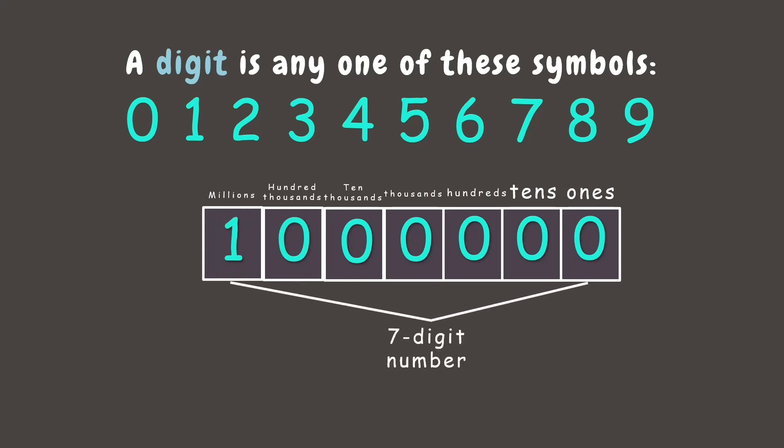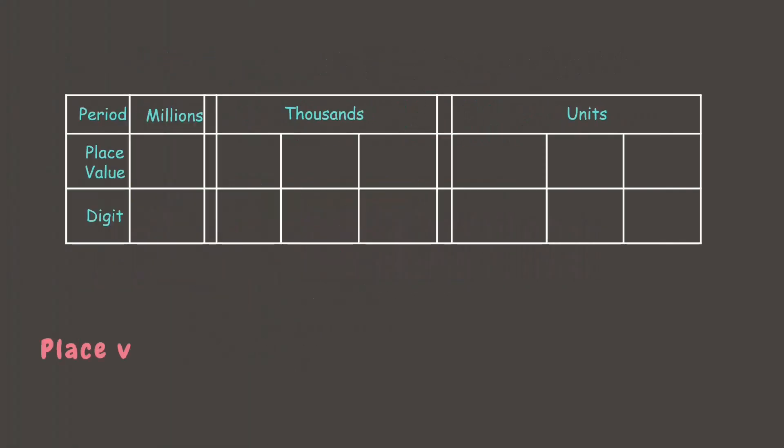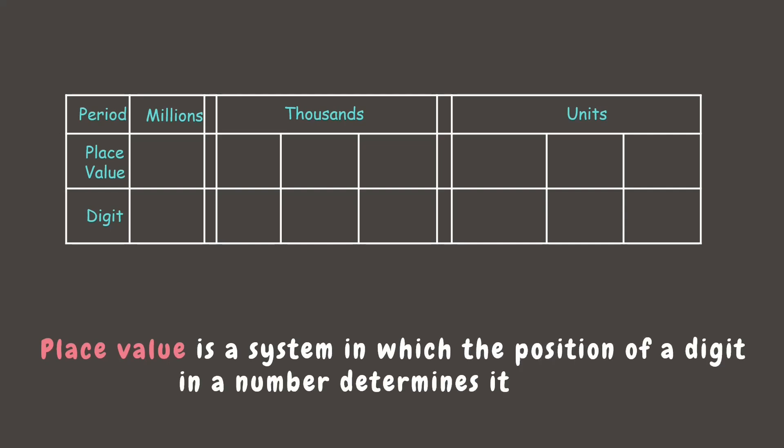Now these are called the place values. Place value is a system where the position of a digit in a number determines its value. It also helps us read and write numbers correctly.